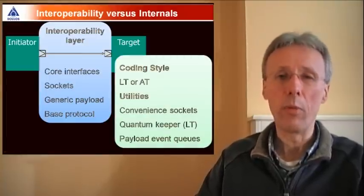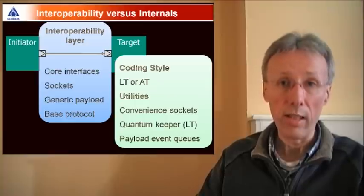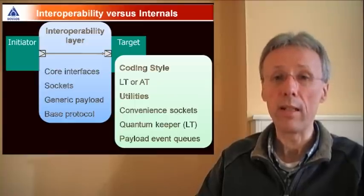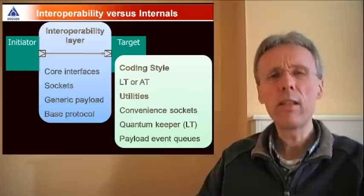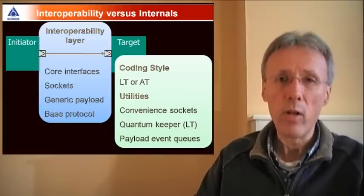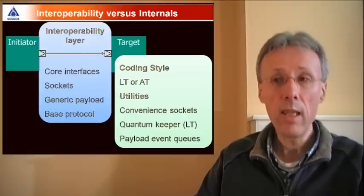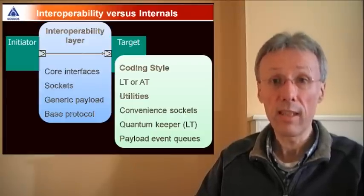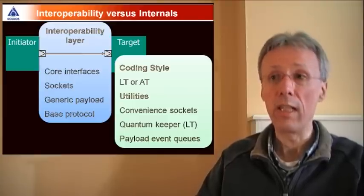In addition to the interoperability layer, TLM2 also defines a couple of coding styles, loosely timed and approximately timed, and a set of utilities. The coding styles and the utilities don't directly make or break interoperability, but they are important for productivity, they are important to ensure a consistent coding style, and to minimize the learning curve for TLM2.